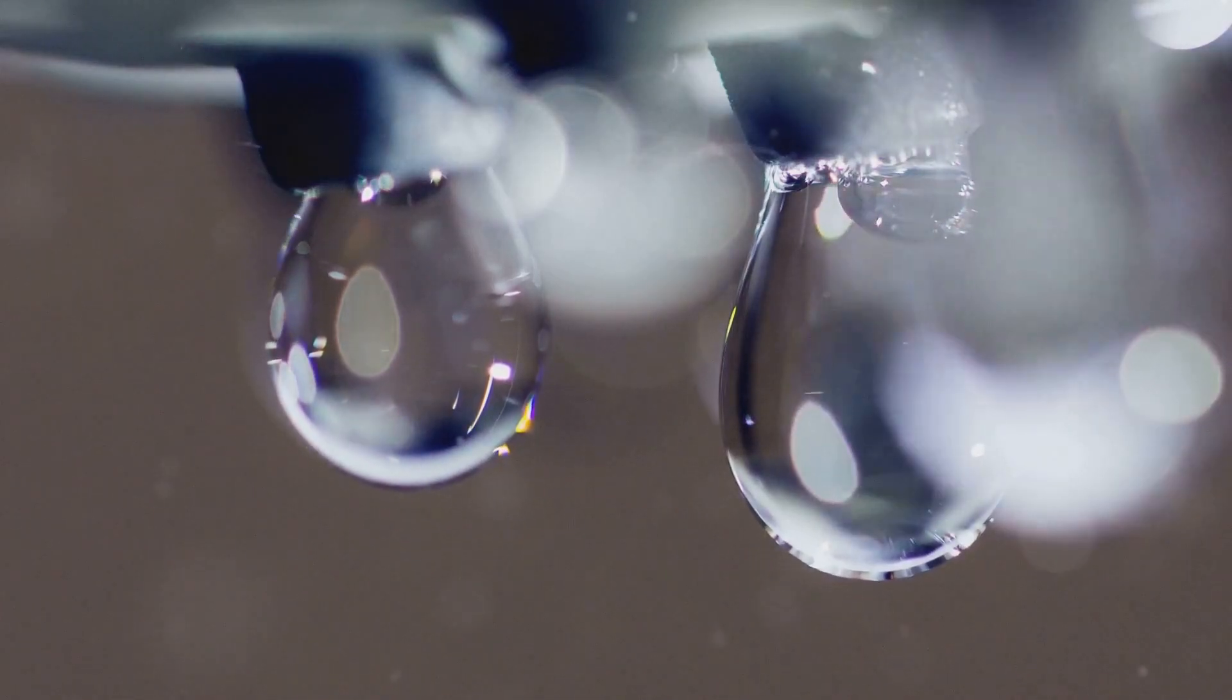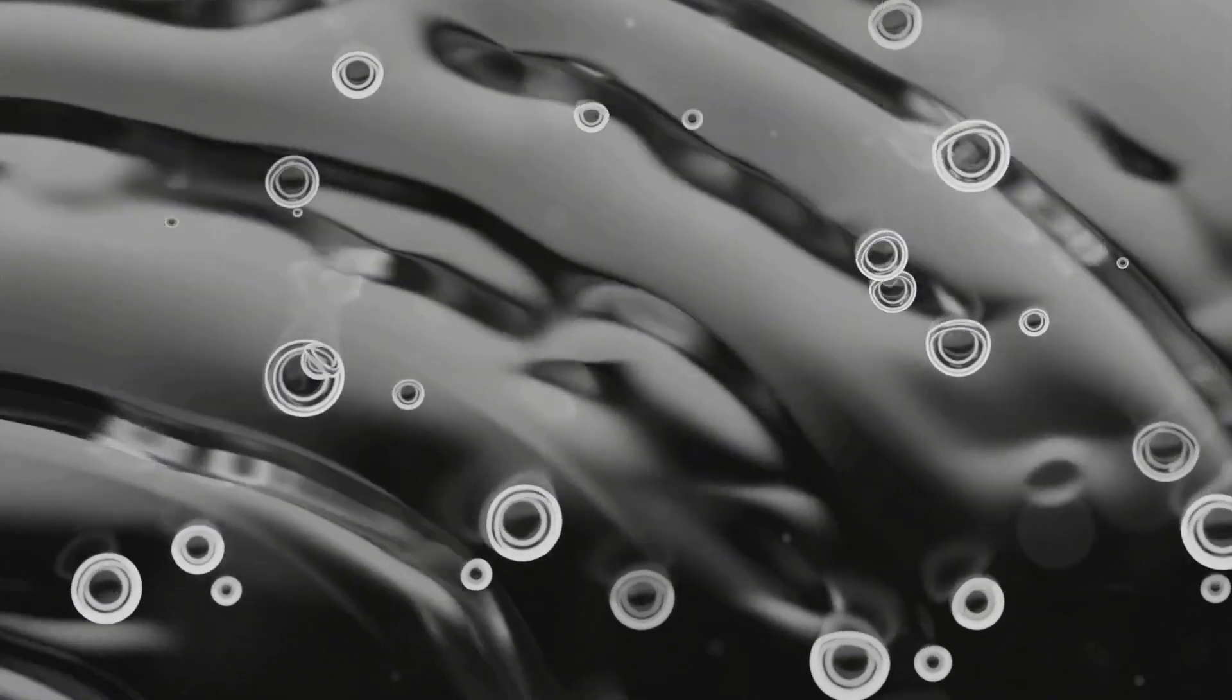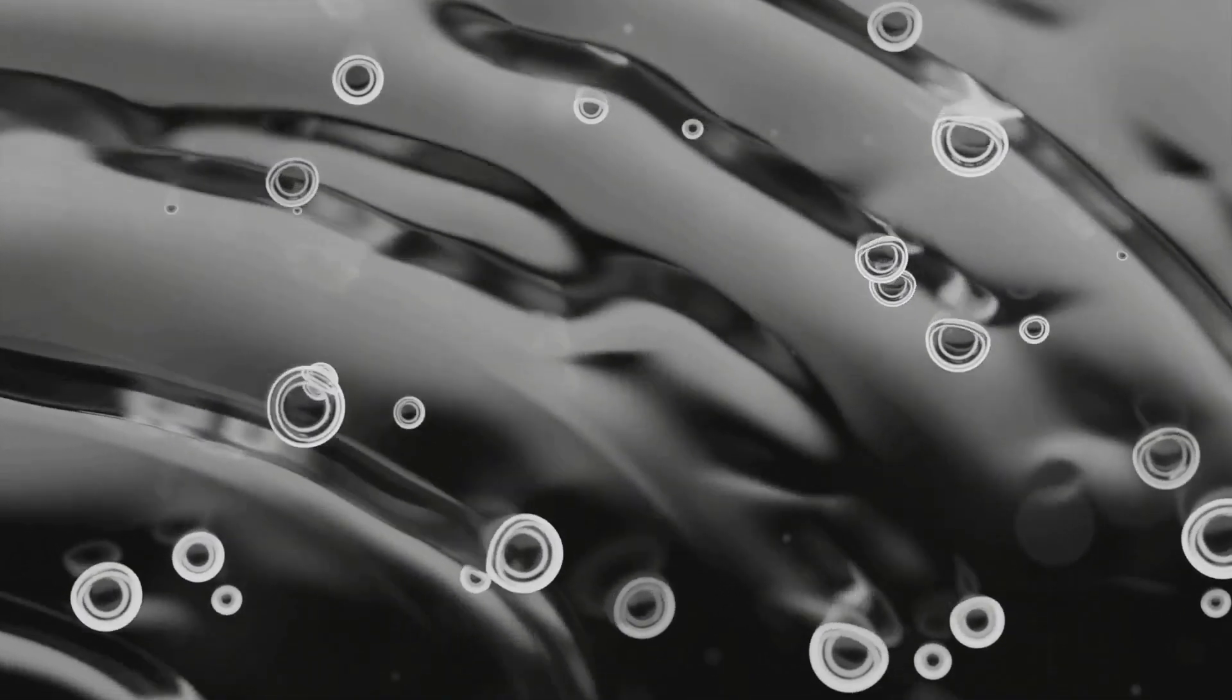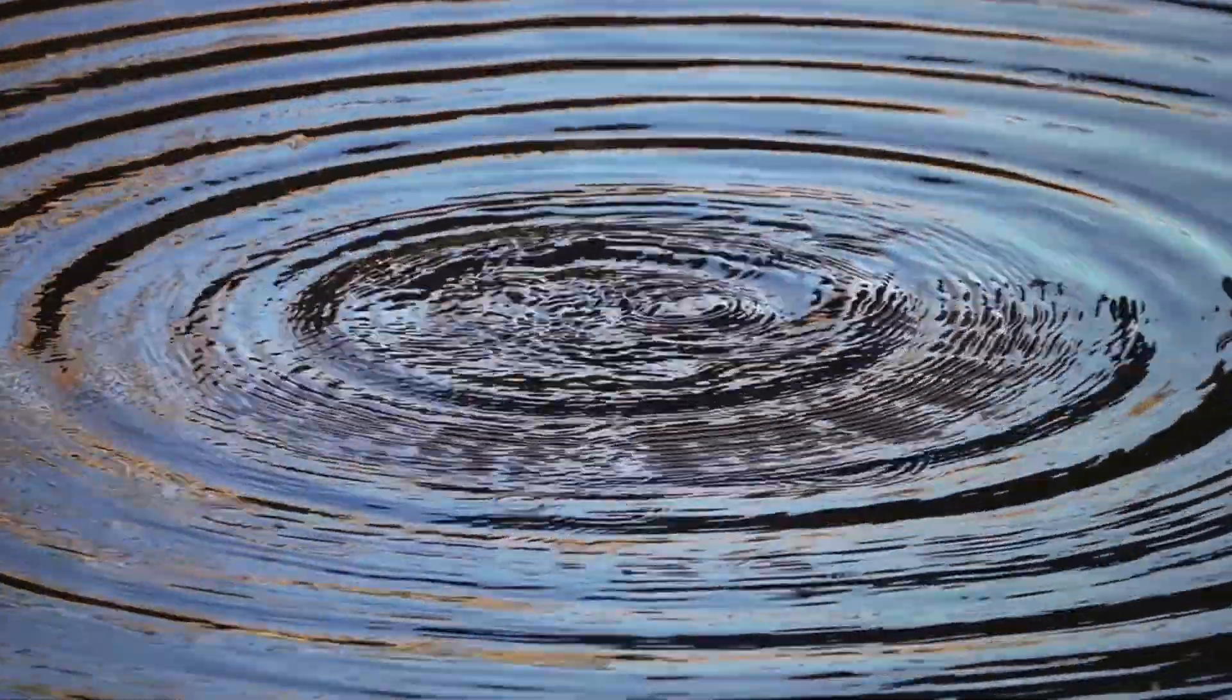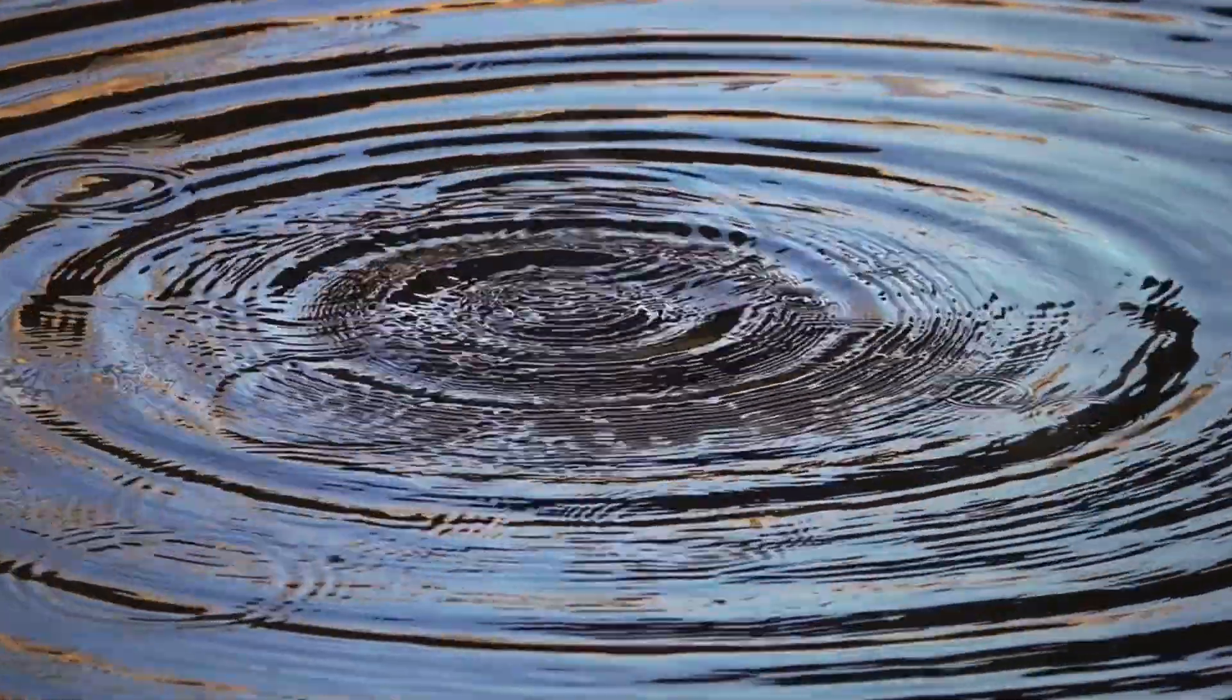Bouncing droplets, in their own way, also demonstrate this quantization. Under certain conditions, droplets can settle into stable orbits, circling around a central point. These orbits are not arbitrary. They are quantized, meaning that only specific orbits with specific radii are allowed. This quantization arises from the interplay between the droplet's energy and the wave field it generates.